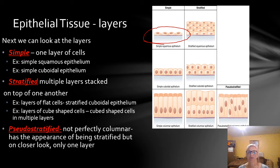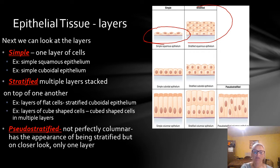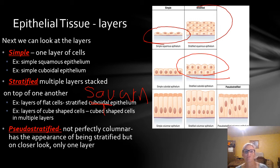Stratified means multiple layers stacked together — usually many, many layers. On the left we have simple squamous epithelium, and on the right we have a stratified example. Stratified examples are going to be layers of flat cells. Understanding what these words mean really helps and is much better than just trying to memorize. Stratified cuboidal epithelium, for example, is called that because it is in multiple layers, cuboidal because it is cube-shaped, and epithelium because it is epithelial tissue.